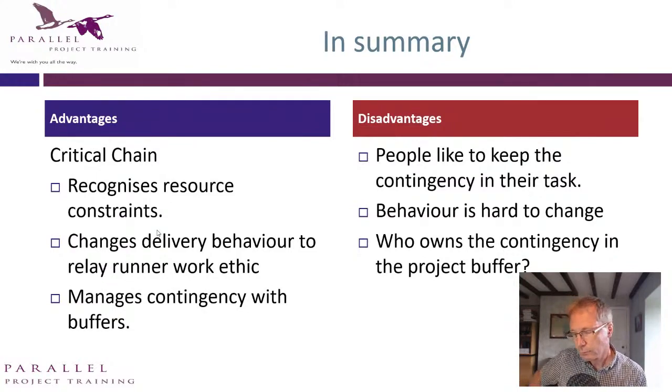For box six and box seven exams, you just need to be able to describe the difference. The key differences are: one, recognizing the resource constraints across the plan — it's not just one project; and two, buffer management — putting contingency in. That's critical chain as a new feature of box seven that wasn't in box six. It's going to appear in the PFQ, the PMQ, and likely the PPQ further down the line.